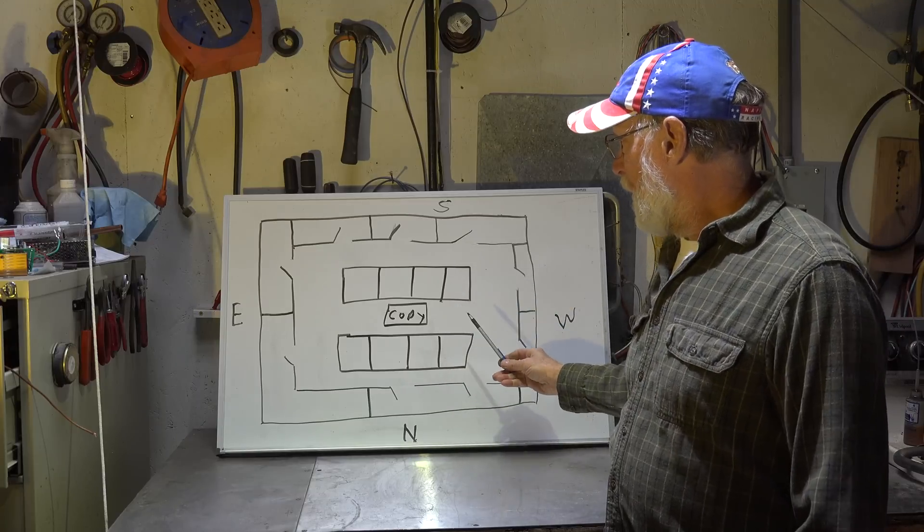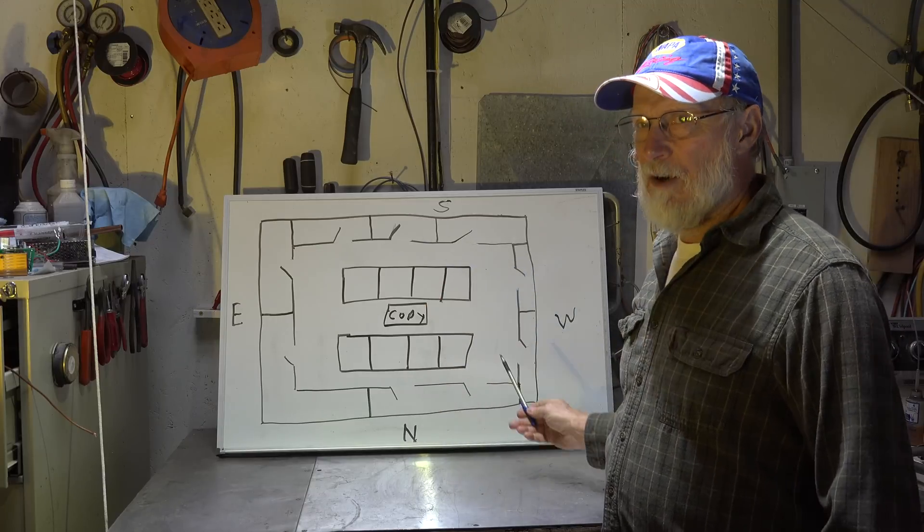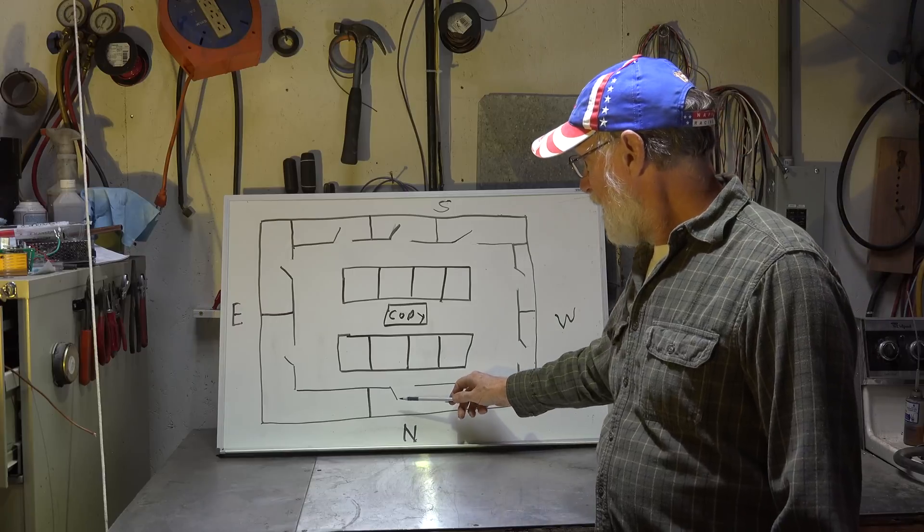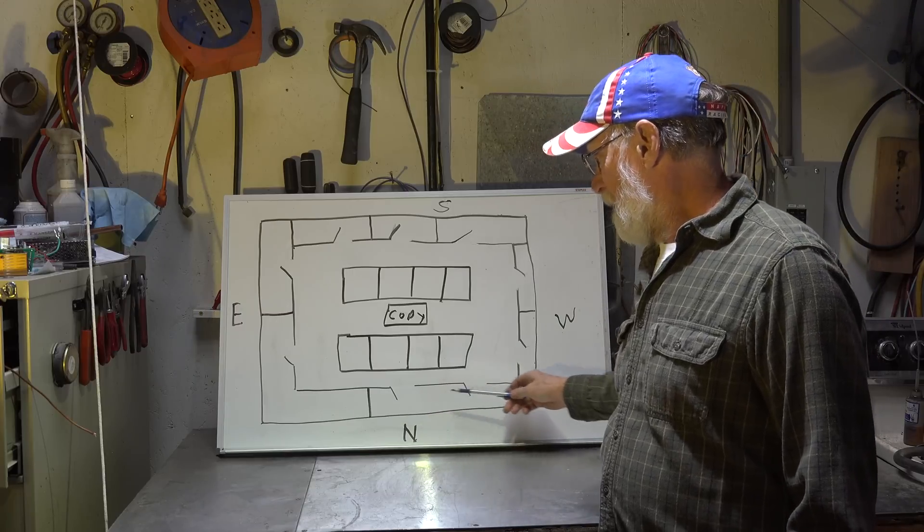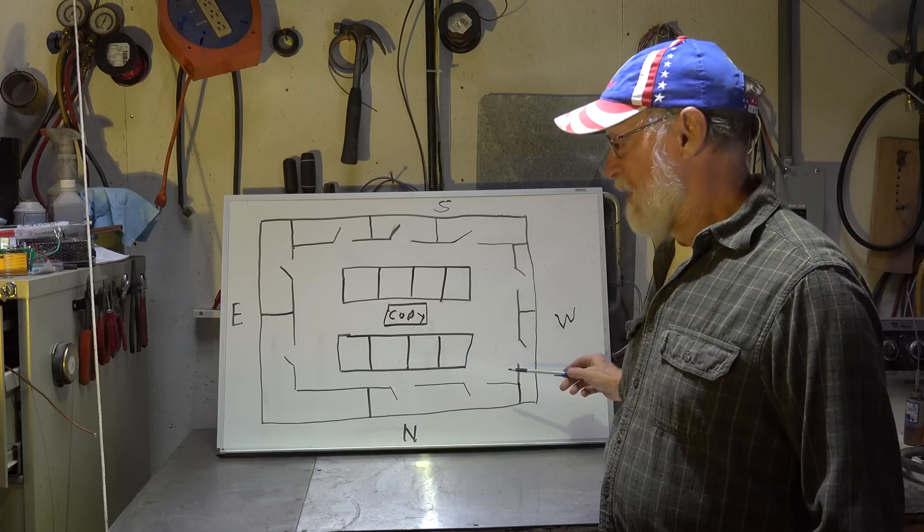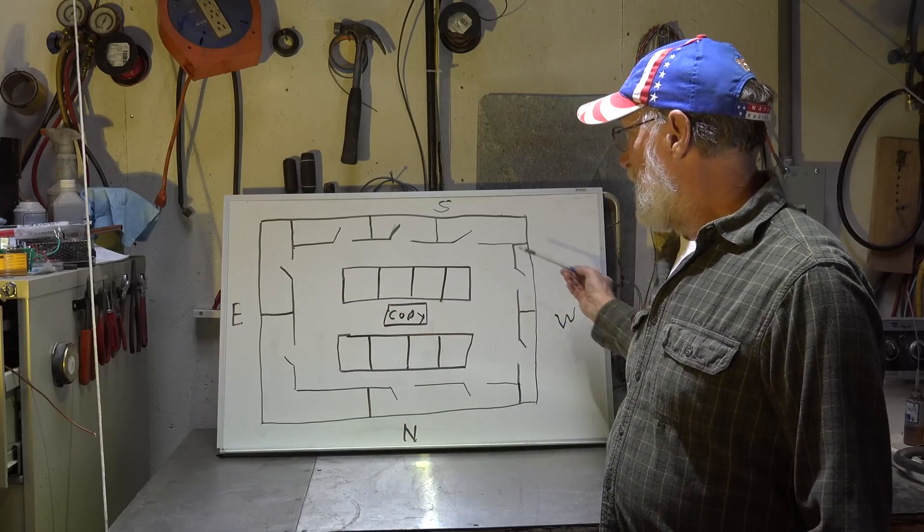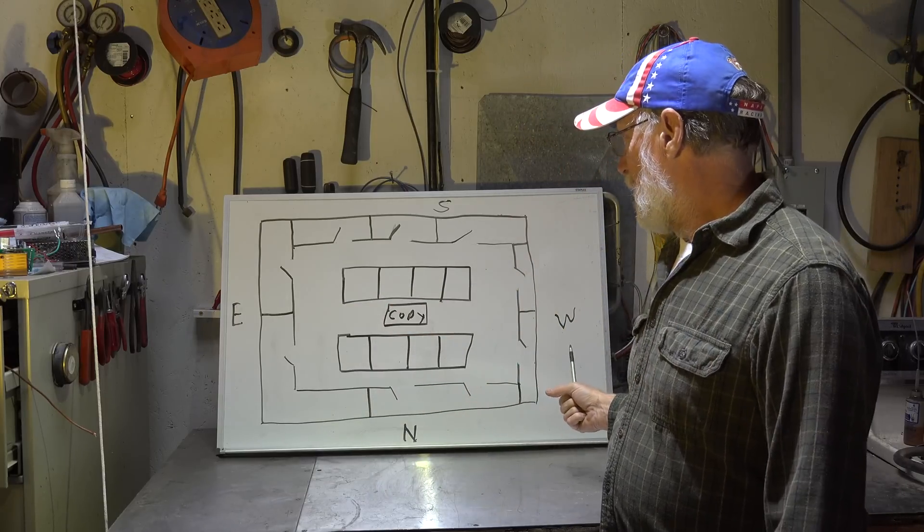So the loads in this building are variable. In the summer, the load from outside is going to be very low in the north side. But as I said, east and west and south are going to have higher loads.